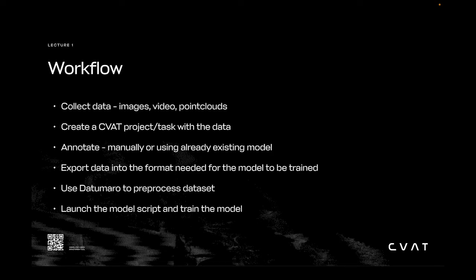First, collect the data — this can be a set of images, videos, or point clouds. Then, create a CVAT project using that data. Next, annotate the data with CVAT; this can be done manually, automatically, or both. Once it's annotated, export it into the proper format needed for training using Datumaro. Finally, use Datumaro to do the rest of the pre-processing — for example, splitting the dataset. At this point, you're ready to train the model.